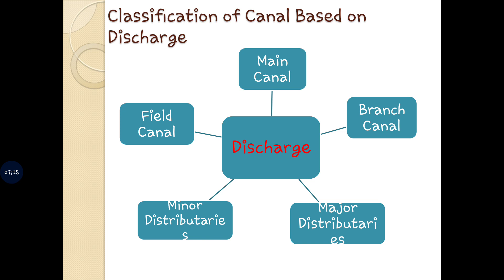The next classification is based on the discharge or discharge-carrying capacity. We have: main canal, branch canal, major distributaries, minor distributaries, and field canals. The main canal is a large-capacity canal which gets the supply of water directly from the river or from the reservoir. The branch canal is also called branches — subdivided as right branch canal or left branch canal depending on direction. They are constructed on both sides of the main canal and collect water from the main canal to supply to the major or minor distributaries. Their discharge-carrying capacity is generally above 5 cubic meters per second.